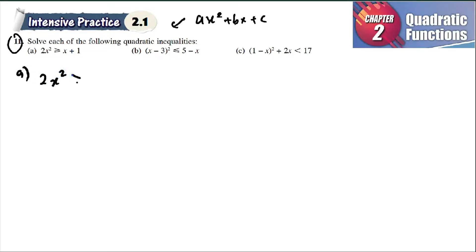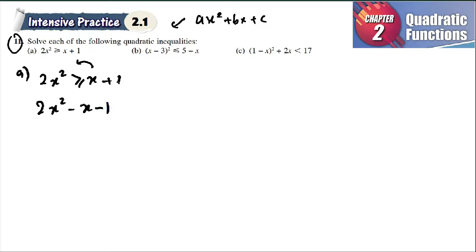So here, 2x² is larger than x + 1. You bring this to the other side — x will become negative x, and 1 will become negative 1. It remains larger than, as you see here.